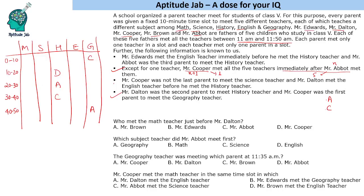Now we check the Edwards condition: Mr. Edwards met the English teacher immediately before he met the History teacher. This means Edwards cannot be first to meet the History teacher, since he must have met the English teacher in the slot just before. So Edwards meets the History teacher in slot 2 through 5, and English teacher in the slot immediately preceding that.